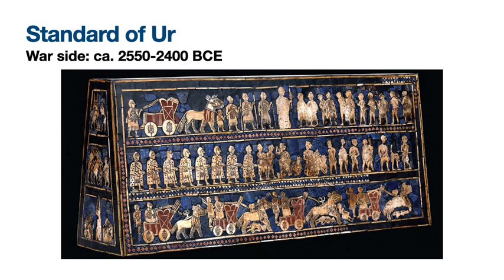Next we have what's called the Standard of Ur. The name can be a little misleading because it suggests a relationship to the military, though we don't know that for certain. It is actually a small wooden box inlaid with stones — both lapis lazuli and red limestone and shells. It has two broad rectangular faces on either end and a narrow trapezoid end. The two rectangular sides give us a lot of information and are commonly known as the war side and the peace side.